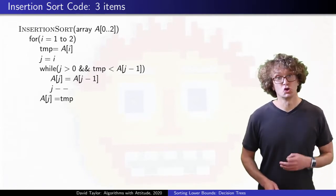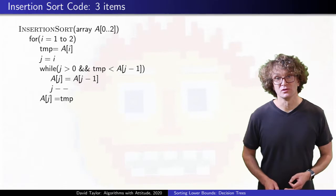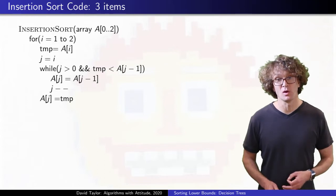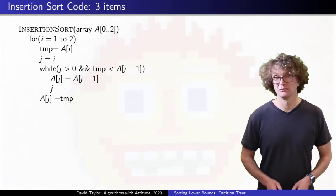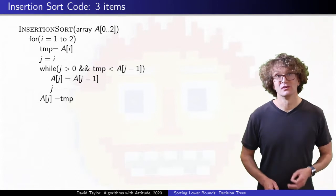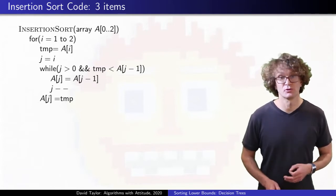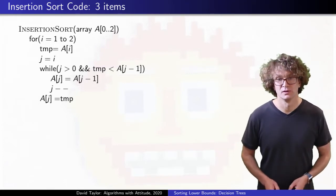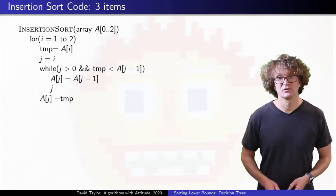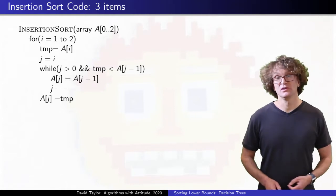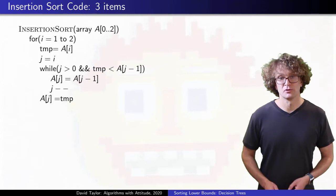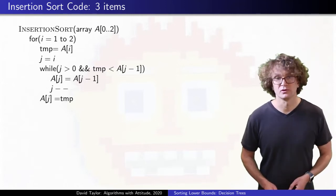An ordered list of true-false outcomes for the comparisons tells us everything that there is to know about what happens in the code, even without a list of what was compared. The first comparison is between the first two elements, the second comparison is between the third element and whichever of the first two elements is smaller, assuming they are different. If that second comparison comes out false, there isn't a third comparison. If the first two comparisons are false, the numbers were given to you in increasing order.